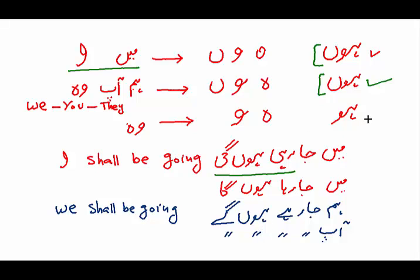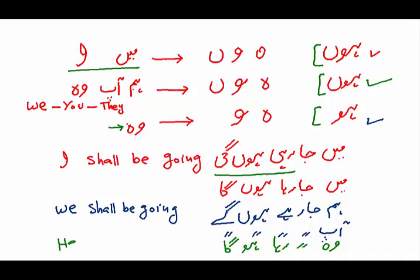For the third person singular using 'ho': wo ja rahi ho ga means he will be going, and wo ja rahi ho gi means she will be going. With a name, for example: Mariam ja rahi ho gi — Mariam will be going. Ahmad ja raha ho ga — Ahmad will be going.